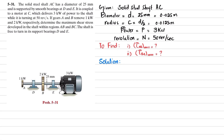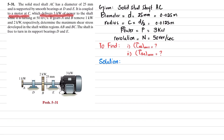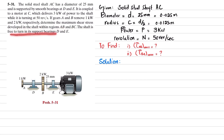Welcome back. Problem 5-31: The solid steel shaft AC has a diameter of 25 millimeters and is supported by smooth bearings at D and E. It is coupled to a motor at C which delivers 3 kilowatts of power while turning at 50 revolutions per second. If gear A and gear B remove 1 kilowatt and 2 kilowatts respectively, determine the maximum shear stress in the shaft within regions AB and BC. The shaft is free to turn in its support bearings D and E.